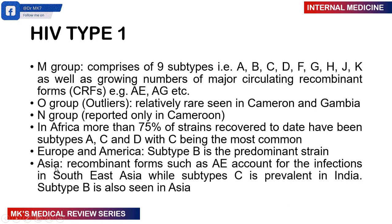What exactly is the origin of HIV? HIV originated from Central Africa. There is a lot of debate about where HIV truly came from. The theory that makes the most sense is known as the hunter theory. Before HIV was transmitted to humans, it was first isolated from monkeys — a virus referred to as simian immunodeficiency virus, or SIV.